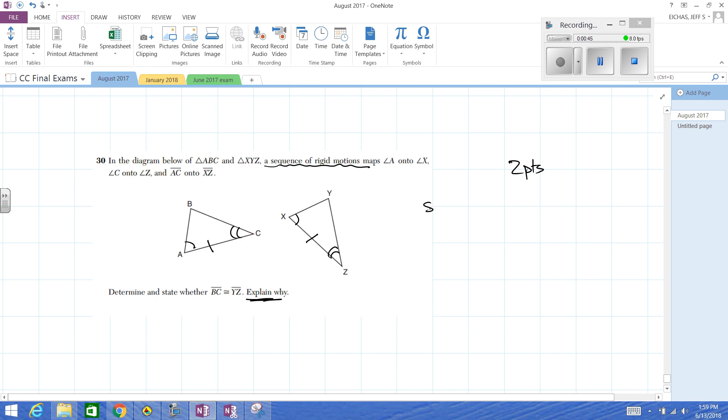So first, what we want to do is say triangle ABC is going to be congruent. Let's skip a little bit. Sorry about that. First, angle A is congruent to angle X, angle C congruent to angle Z, and AC congruent to side XZ, because there is a sequence of rigid motion transformations that will map one onto the other.